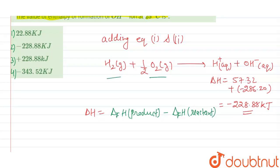So for this reaction, the heat of reaction given as minus 228.88 kilojoules will be equal to heat of formation of products, that is heat of formation of H plus and OH minus, so heat of formation of H plus plus heat of formation of OH minus, minus heat of formation of reactants, so heat of formation of H2 gas minus heat of formation of O2 gas.